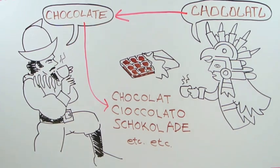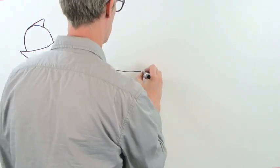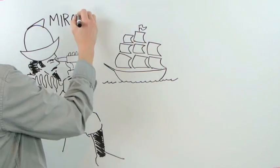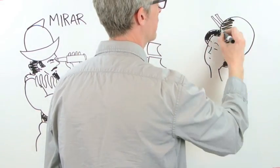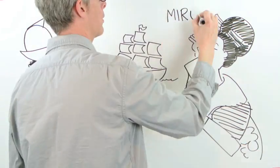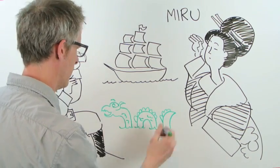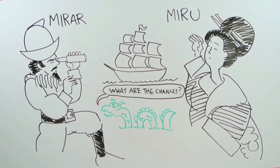Another way languages end up with words that seem related is by pure dumb chance. Sometimes languages just happen to hit on the same sequence of sounds for the same thing. The Spanish word for to look happens to be a lot like the Japanese word for to look. These coincidences happen more than you might think. After all, there are only so many sounds the human vocal tract can make. There's bound to be some accidental overlap.